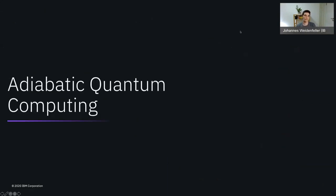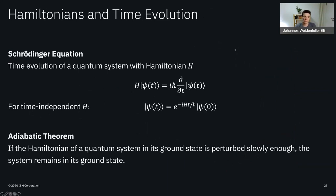Now, why did we choose this particular variational form? To understand this, we need to talk about adiabatic quantum computing. The Hamiltonian represents the total energy of the quantum system. The Schrödinger equation tells us that the time evolution of a quantum system is also governed by the Hamiltonian H. The key takeaway is: given a system initially in state Psi_0, to find the state after time T has passed, we exponentiate the Hamiltonian H and apply the corresponding operator to our initial state, yielding the quantum state after time T.